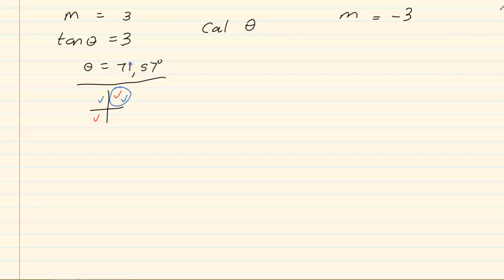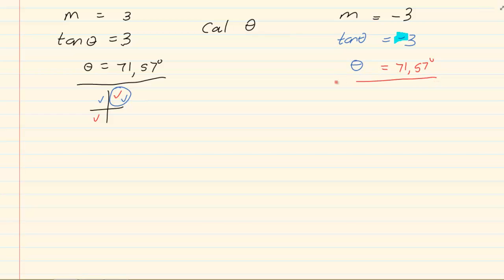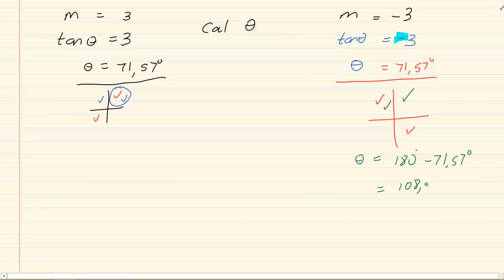Now if m is equal to negative 3, then tan theta is equal to negative 3. From your trigonometry, you do not press the negative sign in your calculator — the negative simply tells you which quadrant you are in. Press shift, tan, 3, and you get 71.57 degrees. We know tan is negative in the second and fourth quadrant, but since it's a straight line, we are only in the second quadrant. Therefore, theta is equal to 180 minus 71.57 degrees, which gives us 108.43 degrees.